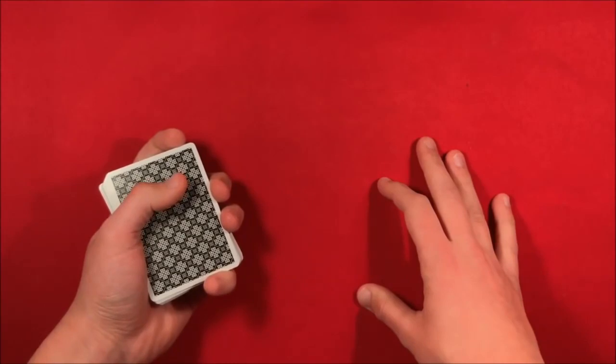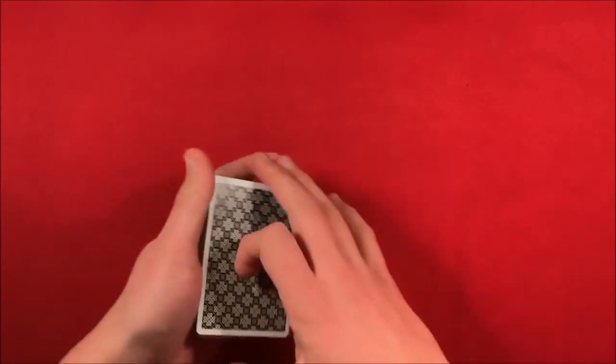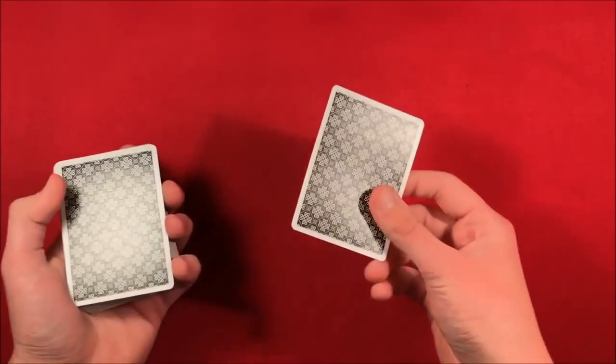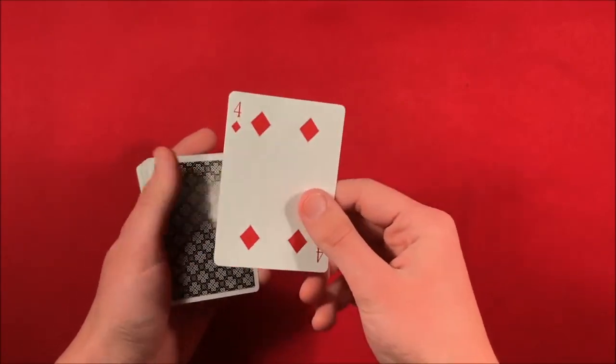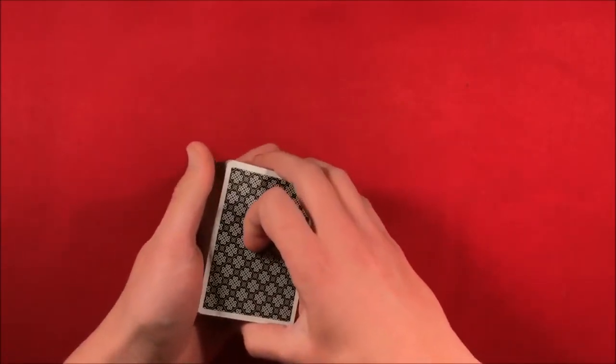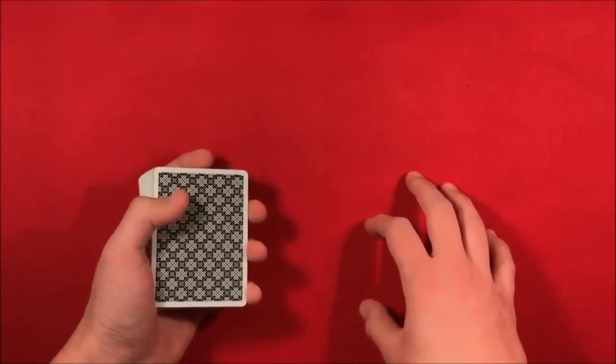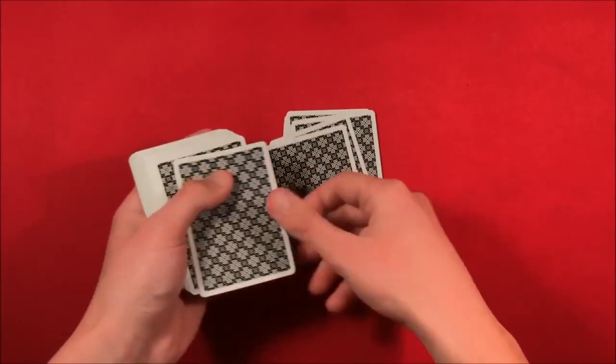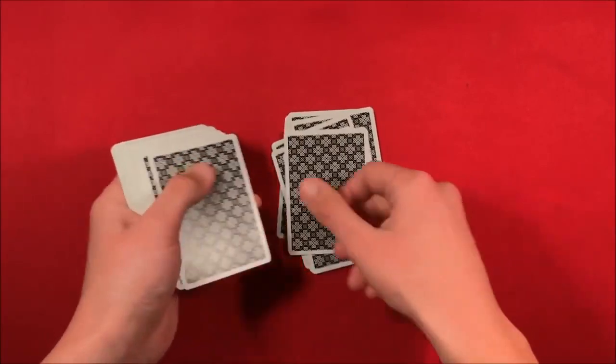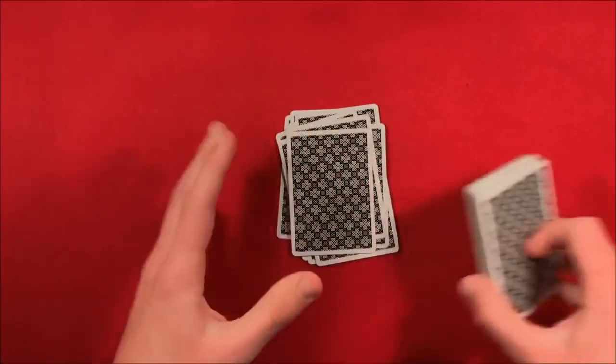So let's say they were gonna pick a number, let's say like 13, so it's a little bit less. Let's say they wanted to pick 13 cards. So what you can do here is you can either remember the top card, in this case the four of diamonds, or I'll show you what I did in the performance. So let's say they pick 13, so you count out 13 cards.